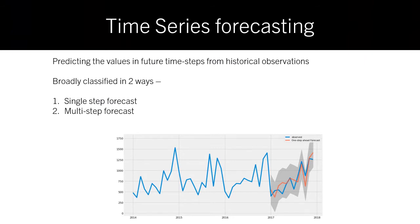Time series forecasting is essentially a time series problem which predicts the values in future time steps from the historical observations. We can broadly classify time series forecasting in two ways: firstly, the single step forecast, and secondly, the multi-step forecast.